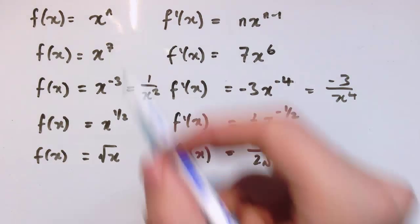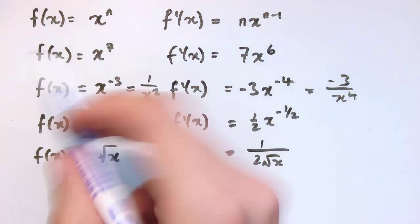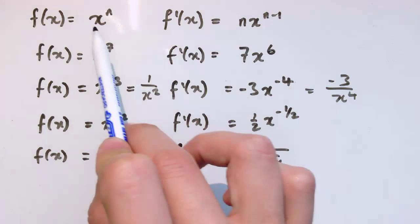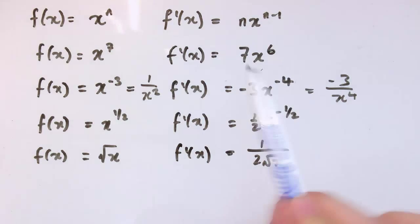And remember, what this means is, if I take the graph of this function, y equals this function, then the gradient at a particular value of x is given by this formula for the gradient, which is the derivative.